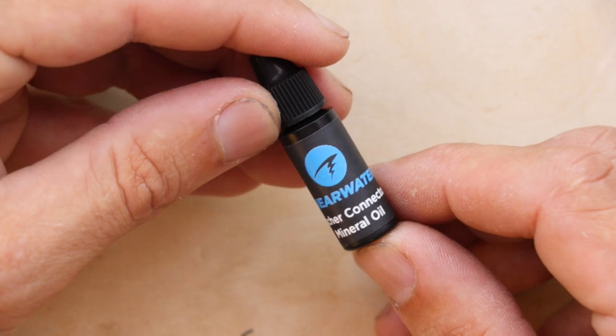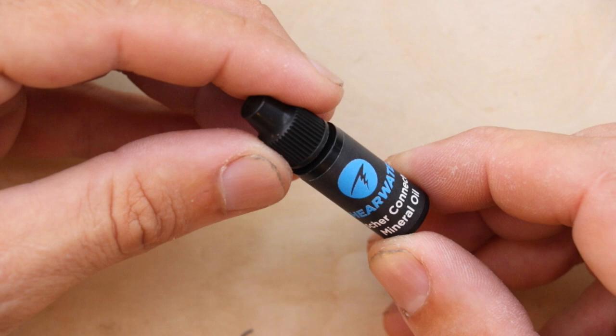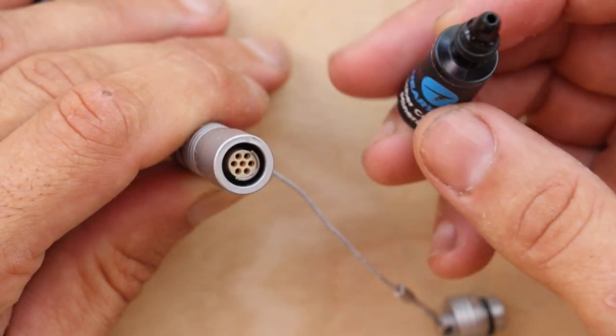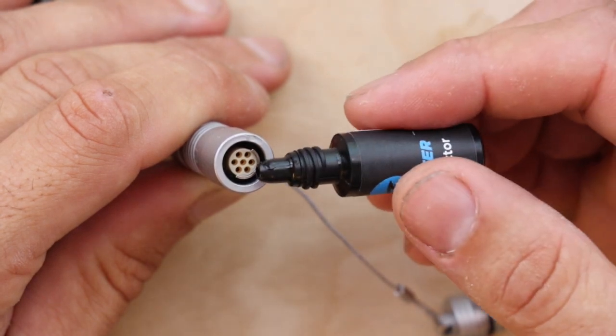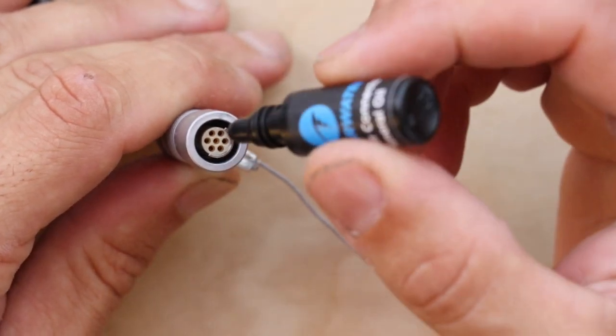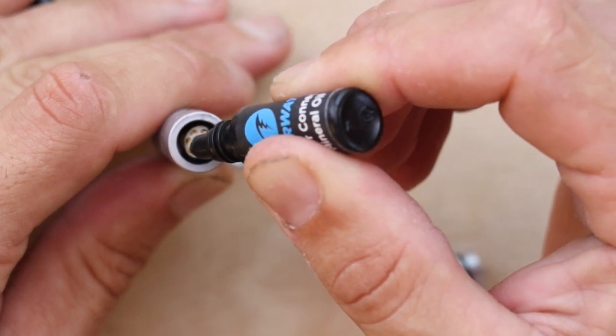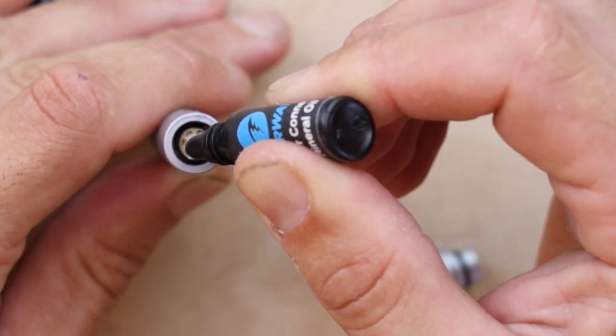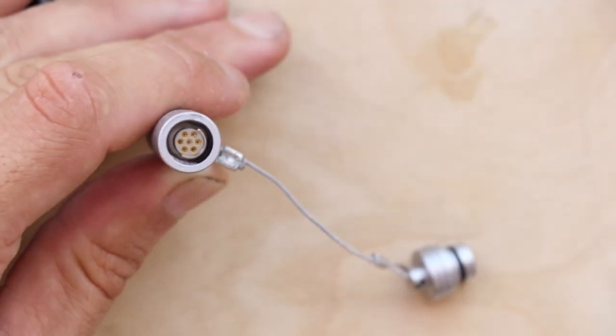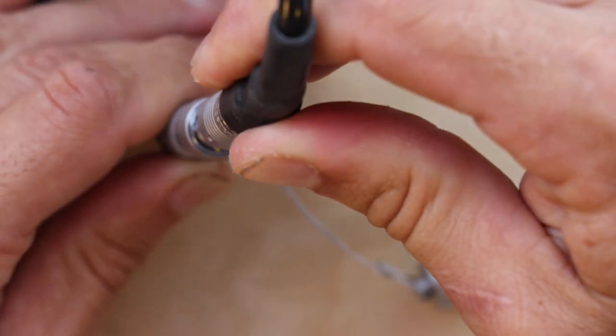Okay the last thing we're going to talk about is the use of mineral oil. Shearwater provides this cute little bottle of mineral oil with any of their products that include a Fisher connector. The purpose of the mineral oil is very simple. It just displaces air that's found in the void of the connector and reduces the chance of flooding when you go underwater. And it's very easy you just take your dropper and add several drops until the connection is completely full.